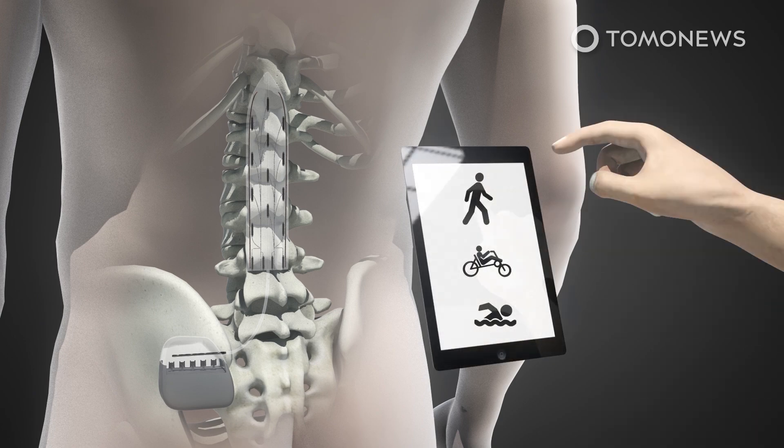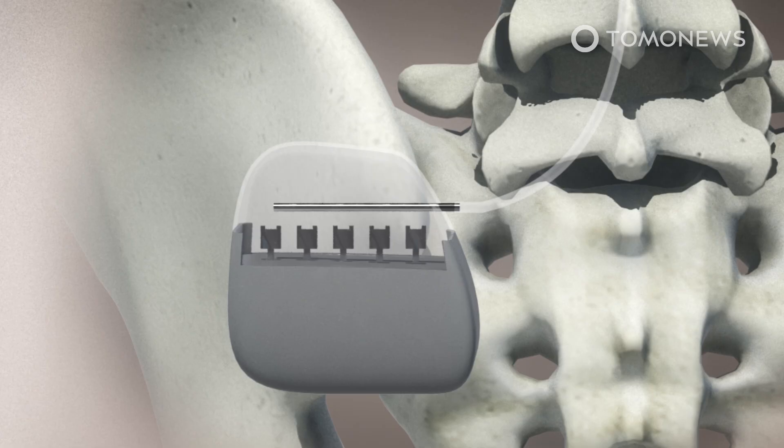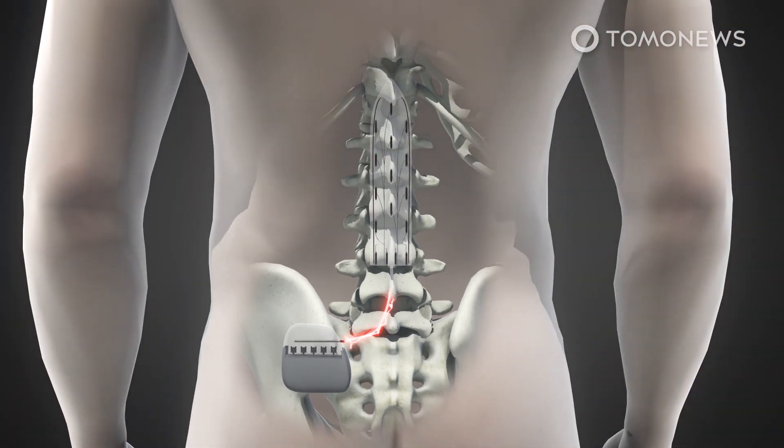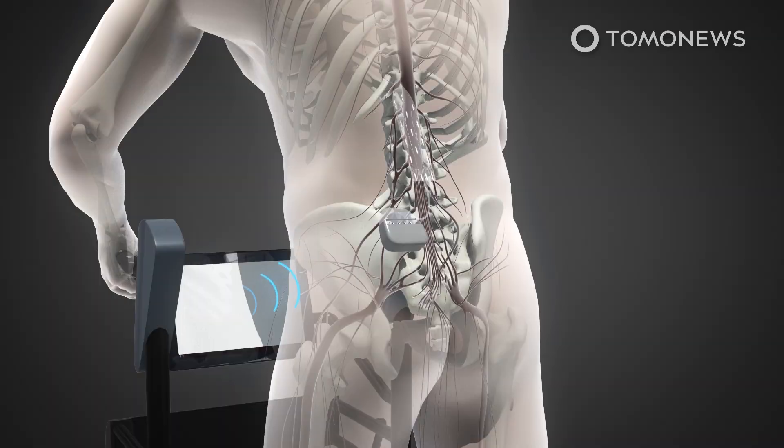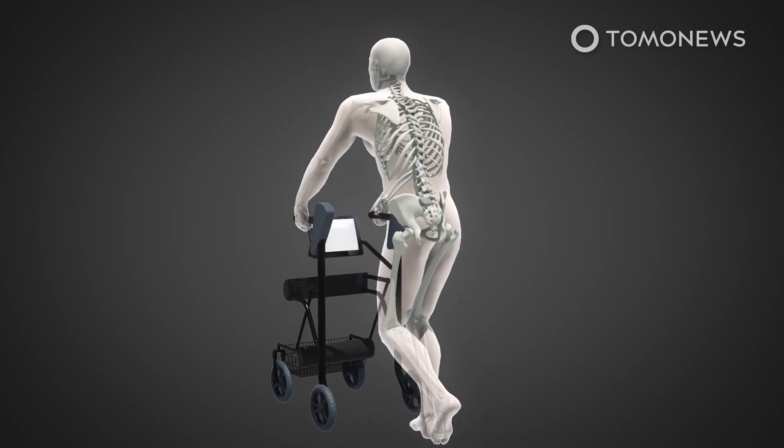The patients use the software to select if they want to stand, walk, cycle, or even swim. The software sends instructions wirelessly to the pacemaker inside the patient's abdomen, which then pulses electricity to different points in the spinal column. These electrical pulses stimulate the nerves that used to control the patient's leg and trunk muscles. This causes the muscles to react in a sequence that allows the patient to move their legs in accordance with the activity they selected.